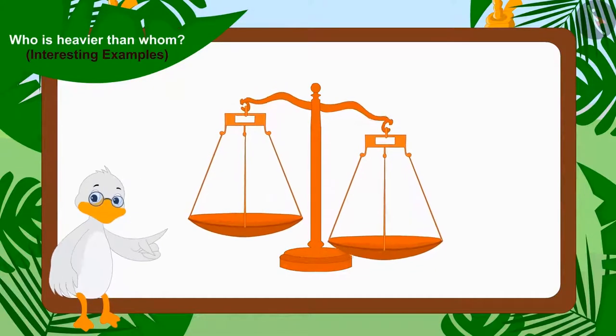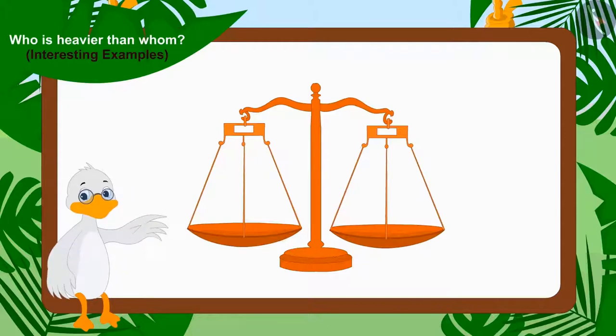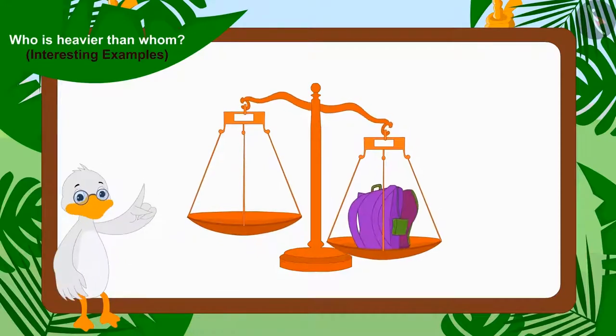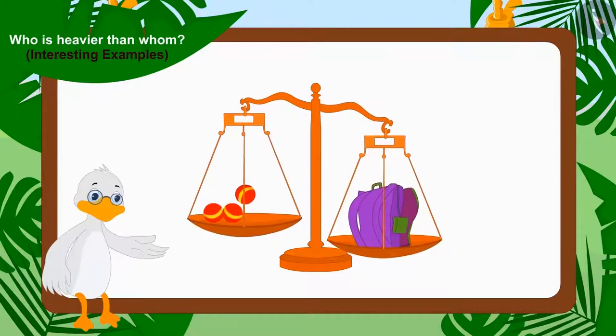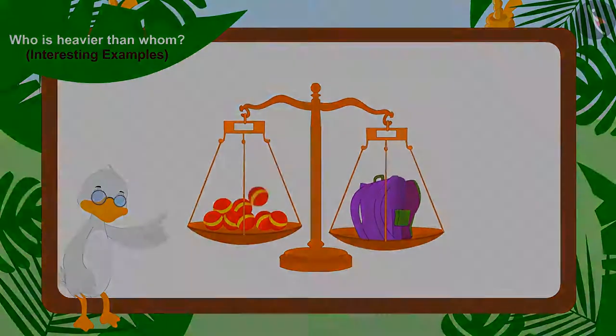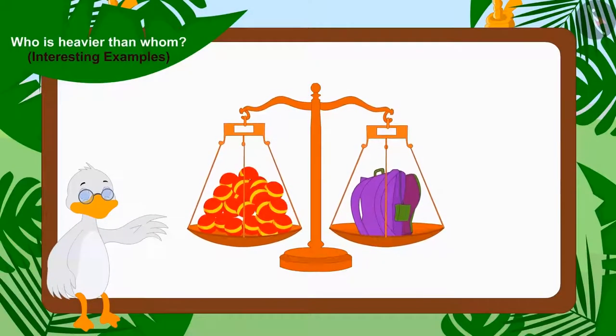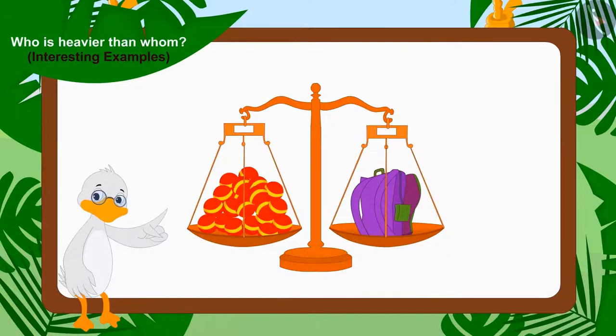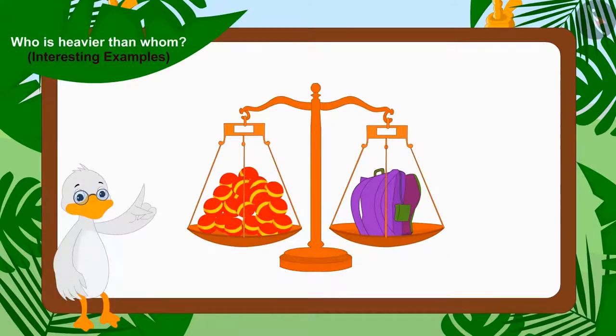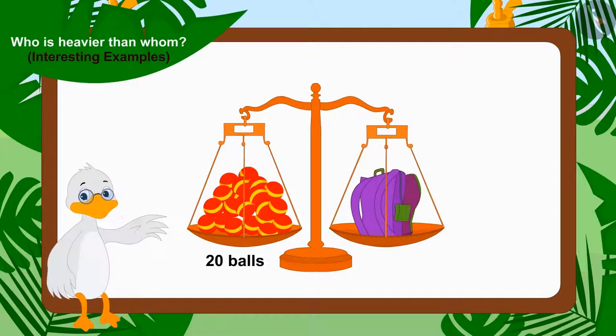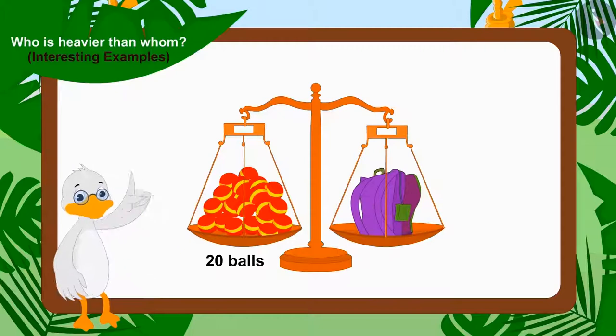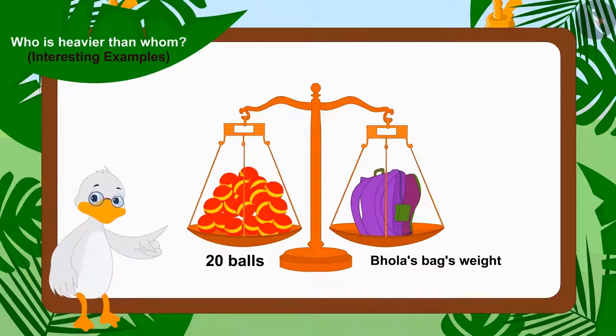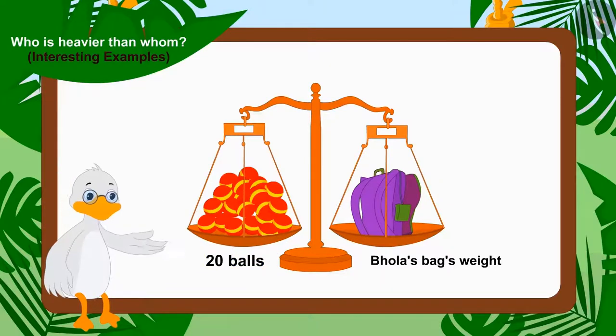Now, Uncle took Sher Khan's bag from the scales and also removed the balls. Now, on one side of the scale, Uncle kept Bhola's bag and on the other side, started placing the balls one by one. Once again, both the plates reached the same level. But this time, there were twenty balls in the plate. Children, what does it mean? Yes, it means that the weight of twenty balls equals the weight of Bhola's bag.